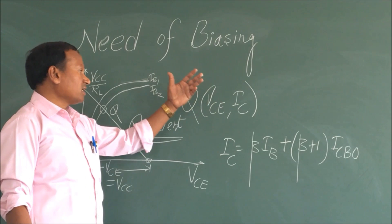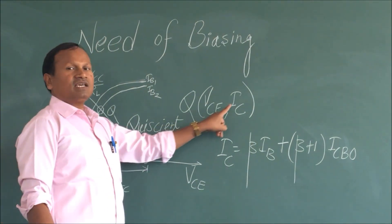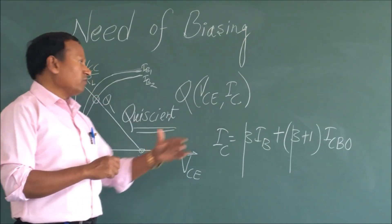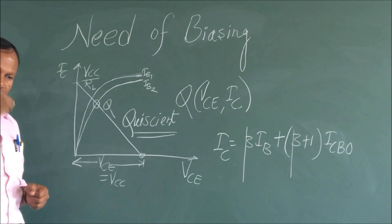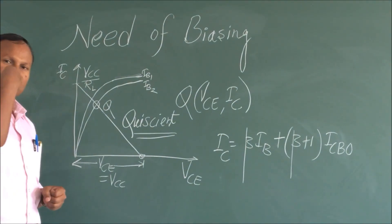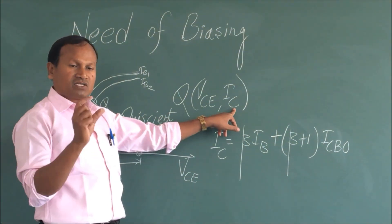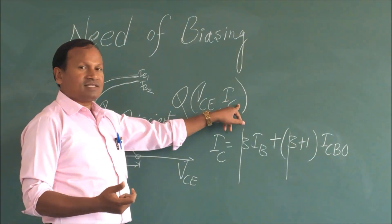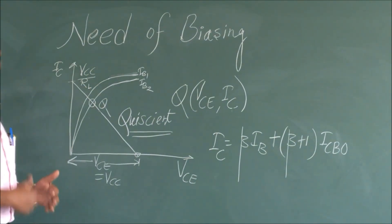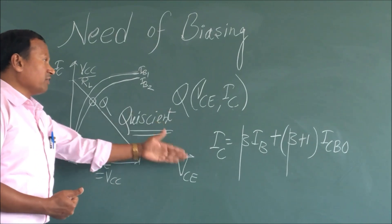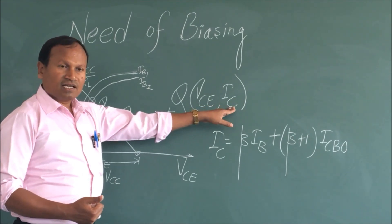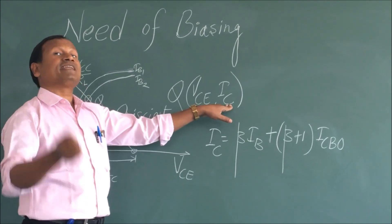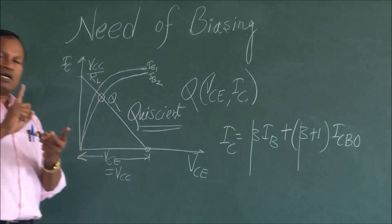Q-point means it is a pair of values — VCE and IC. The values of VCE and IC are called the Q-point. We always want that whatever value of collector current we are getting in the circuit, that must be a stable value. If there is any variation in IC, that is not desired in any transistor. So we need to understand why there is a variation in collector current IC and what needs to be done in order to reduce that variation.